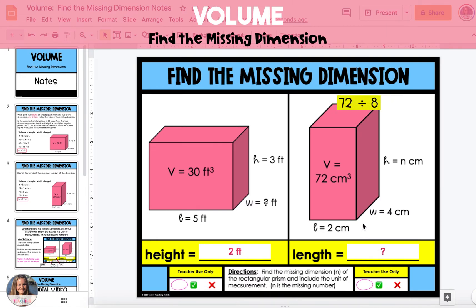And when we divide 72 by 8, we get a missing number of 9. So the height of the rectangular prism is 9 centimeters.